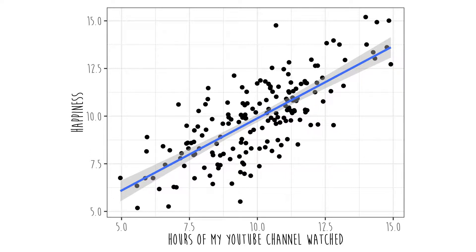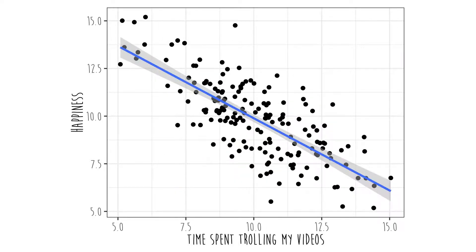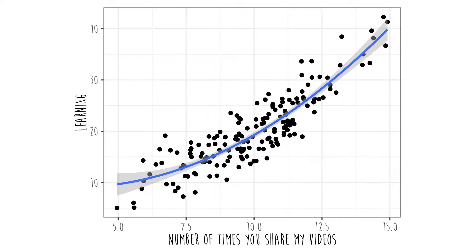What you're looking for is a pattern. A positive pattern, like in this example, means that as the x-axis increases, the y-axis increases. Or a negative relationship, as in this example, means as the x-axis increases, the y-axis decreases. Or we might be looking for a curvilinear relationship, which means that y doesn't grow at the same rate as x increases. For more details, see my video about interpreting graphics.